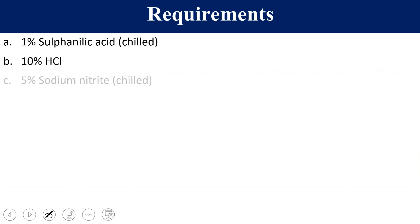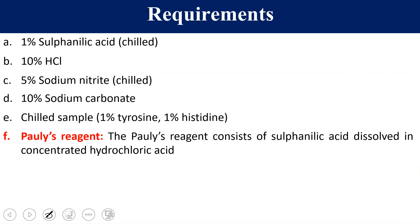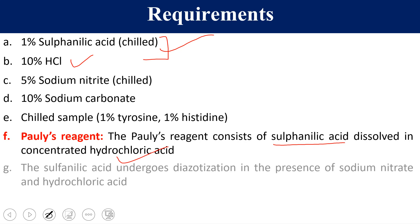We also require 10% sodium carbonate — this is just to make the environment alkaline — and a cold test sample which we are going to detect. In this reaction we use Pauly's reagent, which contains sulfanilic acid dissolved in concentrated hydrochloric acid. These two are normally used for making Pauly's reagent.